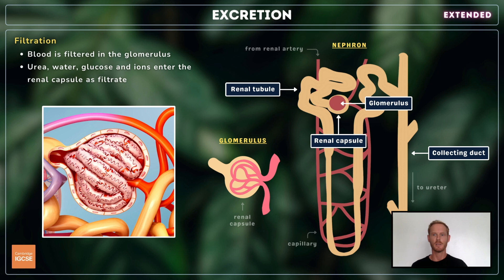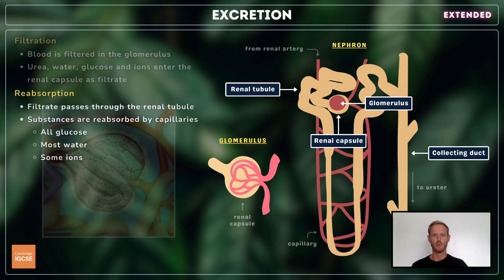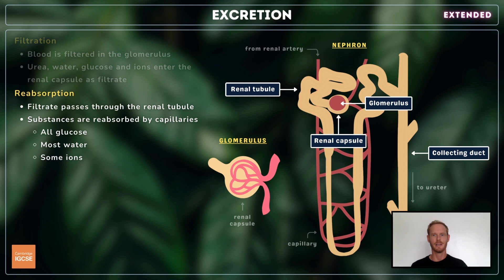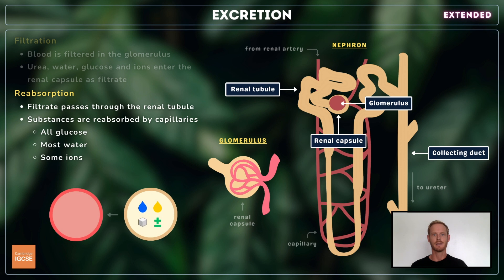The process of removing these substances from the blood is called filtration. The filtrate from the glomerulus collects in the renal capsule and passes down the convoluted renal tubule. As it does this, some of the substances that the body needs move from the filtrate and back into the blood in the capillaries. All the glucose is reabsorbed first, followed by most of the water. Some of the ions are also taken back to maintain the correct concentrations in the blood.